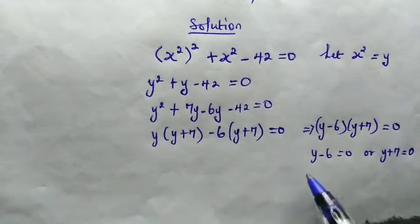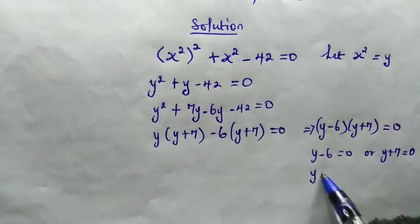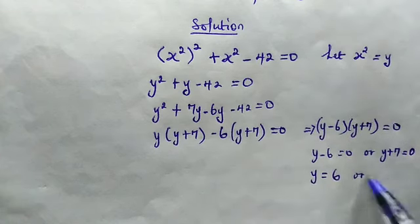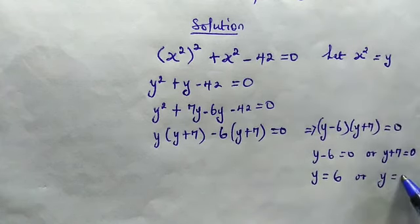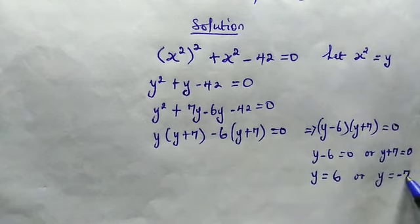So from here, we find solutions for y. y is equal to 6 or y is equal to 0 minus 7, which is negative 7.